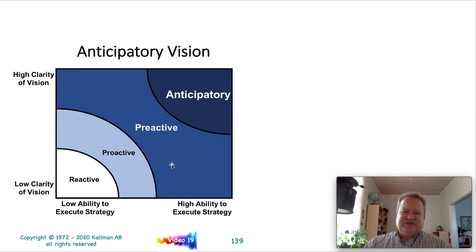As I mentioned, you've got reactive, proactive, preactive and anticipatory in this particular diagram. On the left axis, I've put vision, the clarity of vision, it's either high or low. And then on the horizontal axis here, we've got either the ability to execute and deliver your strategy, it's either low or high.